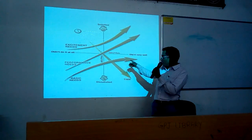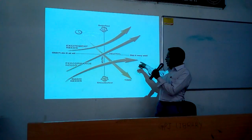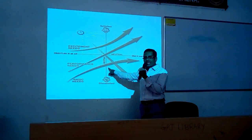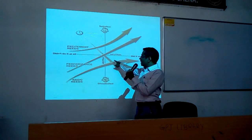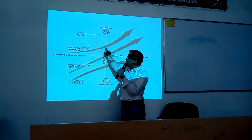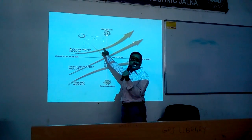This is the Kano model of quality. The graph shows basic grids, then performance grids, and these are excitement grids.